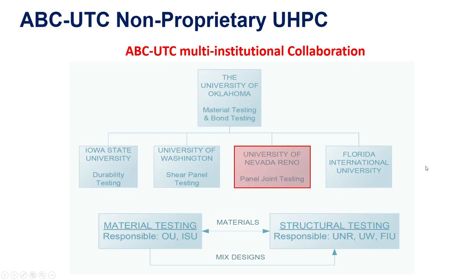This project is a multi-institutional collaboration between all five institutions within the ABC UTC consortium. The University of Oklahoma led this project by developing the material, and each of the universities took a different role. Here at UNR we focused on the panel joint testing.